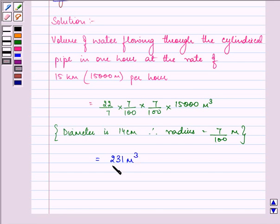Now this 231 meter cube of water will fall into the tank in 1 hour. Since the level of water in the tank is required to be raised by 21 cm that is 21 by 100, volume of water required in the tank will be